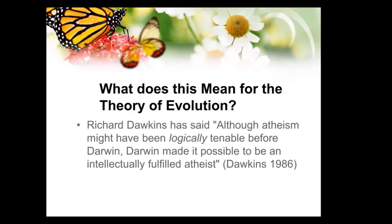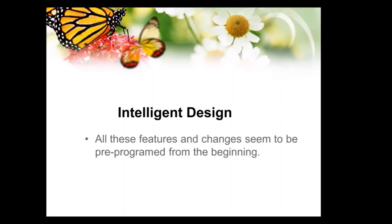Richard Dawkins has said, 'Although atheism might have been logically tenable before Darwin, Darwin made it possible to be an intellectually fulfilled atheist.' I'd say he is way too optimistic — he's been blinded because he wants a worldview that doesn't require intelligent design. All the things we see here seem to be pre-programmed from the beginning. Could you have a butterfly that lays eggs that turn into tiny butterflies that molt? No — there's no way we can imagine that happening. The way it works requires going through the caterpillar step. Eggs go to caterpillars, which then grow through the molting process. With all these thousands of genetic changes, they just cannot occur a step at a time. I see no other option than intelligent design.